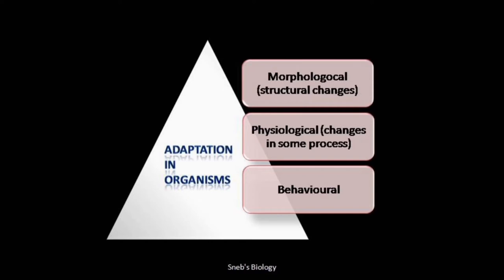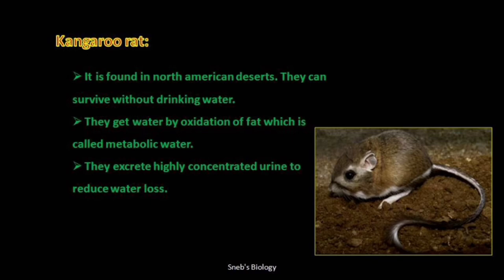The first example is the kangaroo rat, found in North American deserts where water is scarce. It is a tiny animal that survives in extremely dry conditions. One adaptation is that kangaroo rats can survive without drinking water — they get water by oxidation of fat, and this water is called metabolic water. In their entire life they never drink water; they survive only on this metabolic water produced by breakdown of fat.